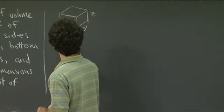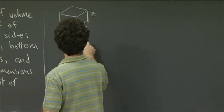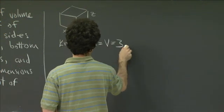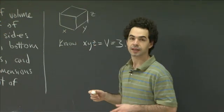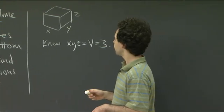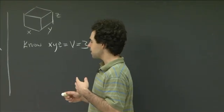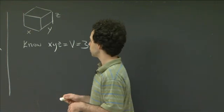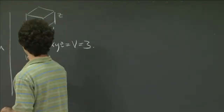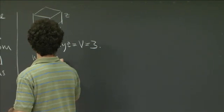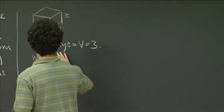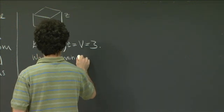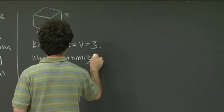So we know xyz equals 3. We have a constraint on x, y, and z. The thing that we want to optimize — that we want to find a minimum for — is the total amount of cardboard used. So we just want to minimize that.